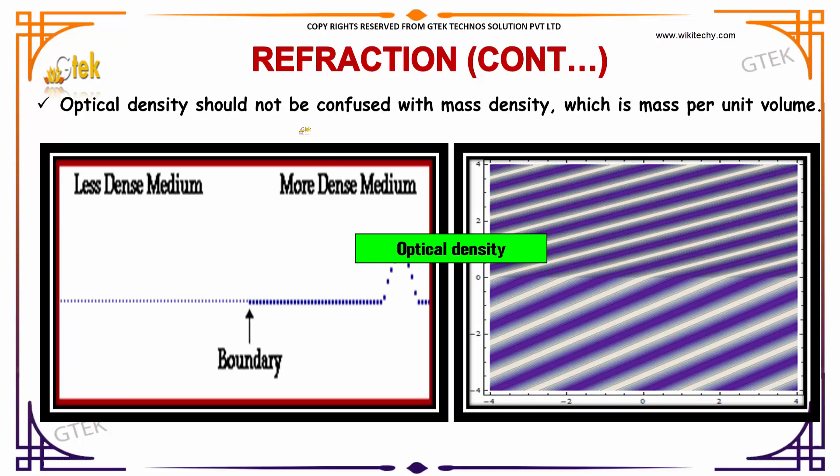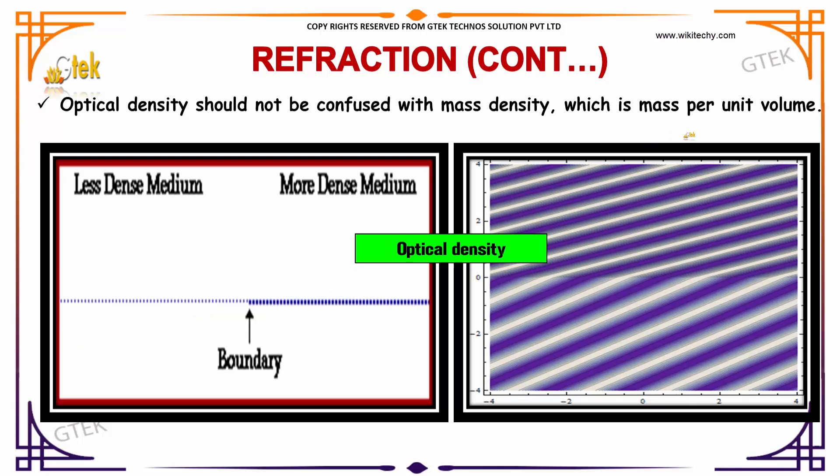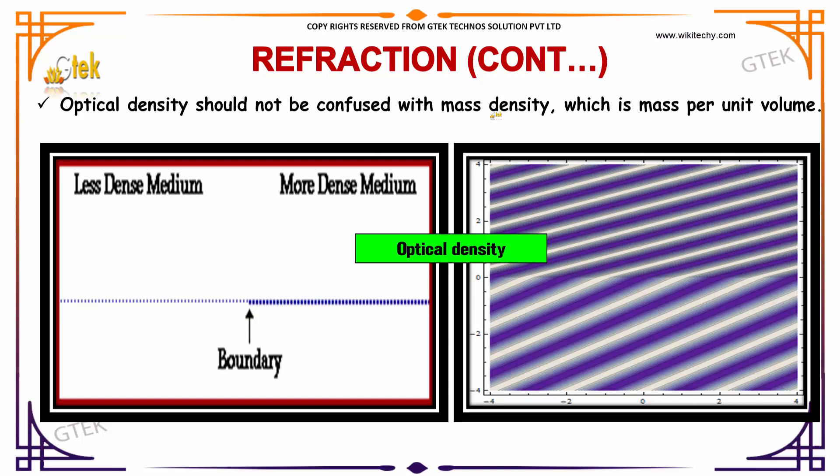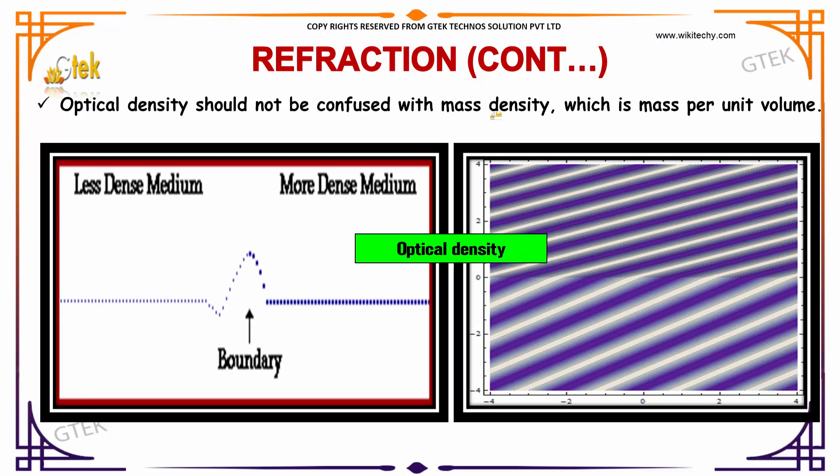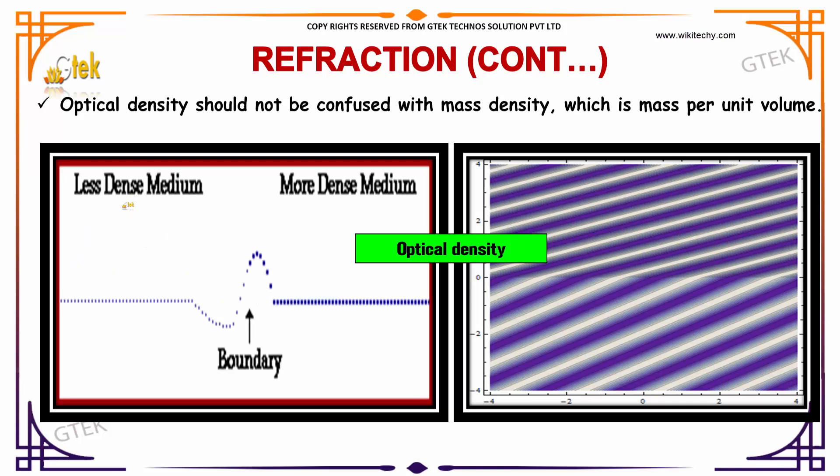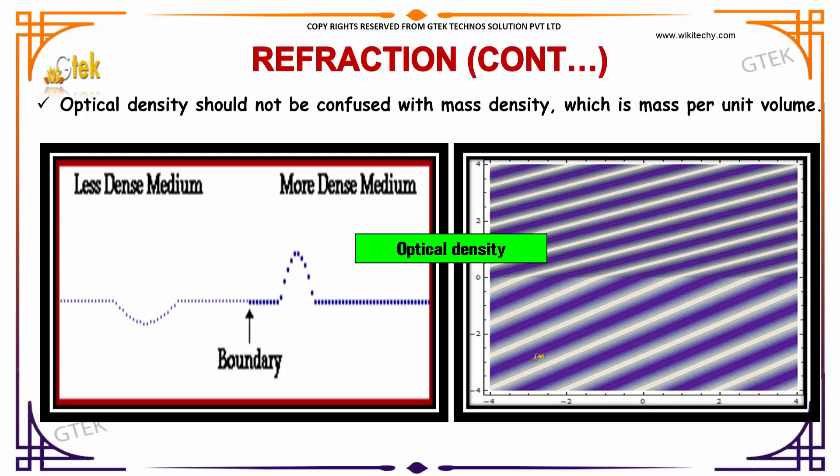Optical density should not be confused with mass density, which is mass per unit volume. Optical density is different from mass density. This is optical density: less dense medium and more dense medium, you can see it.